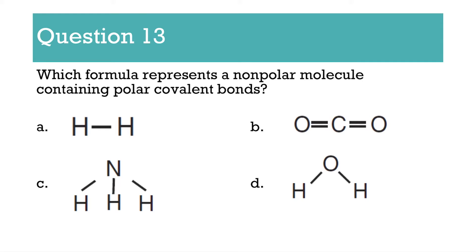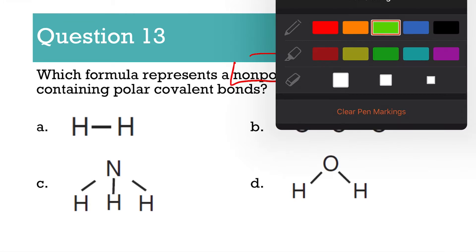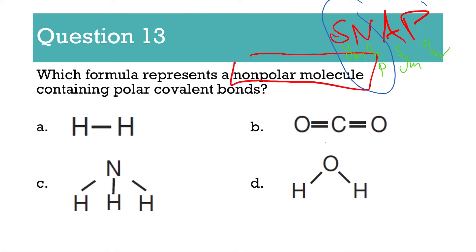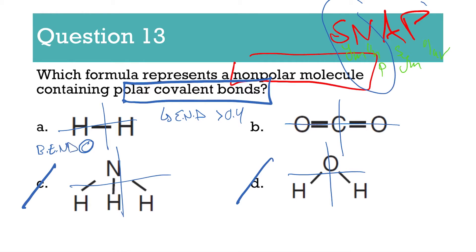Number 13: which diagram represents a nonpolar molecule containing polar bonds? If your molecule is nonpolar, remember SNAP — Symmetrical, Nonpolar, Asymmetrical, Polar. A nonpolar molecule means you have to be symmetrical, meaning if you cut it in half four ways, it's the same. That narrows it down to A and B, but you also need polar covalent bonds where the electronegativity difference is bigger than 0.4. Between O and C it's bigger than 0.4. So the answer is B. You can be a nonpolar molecule with polar bonds.